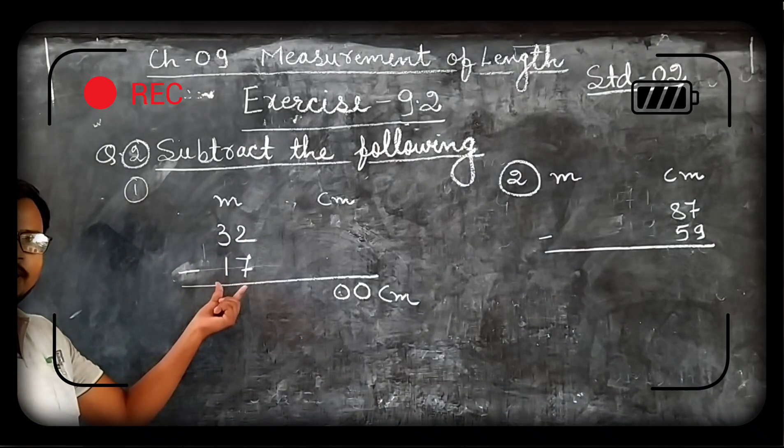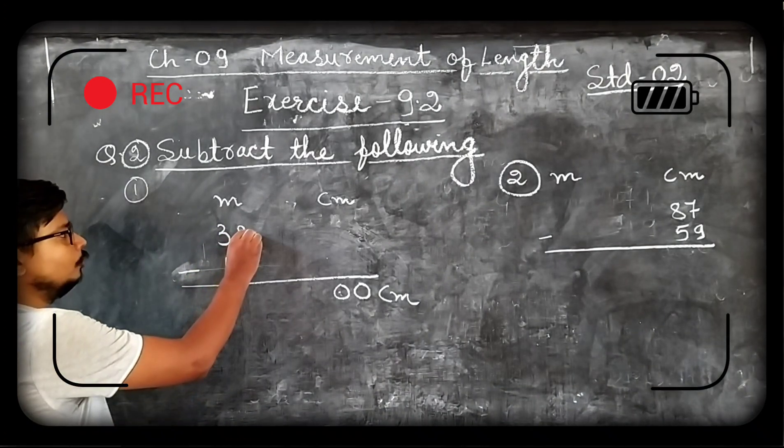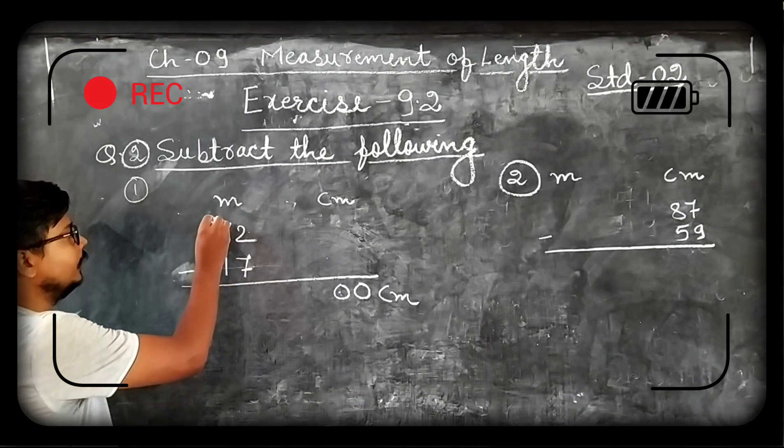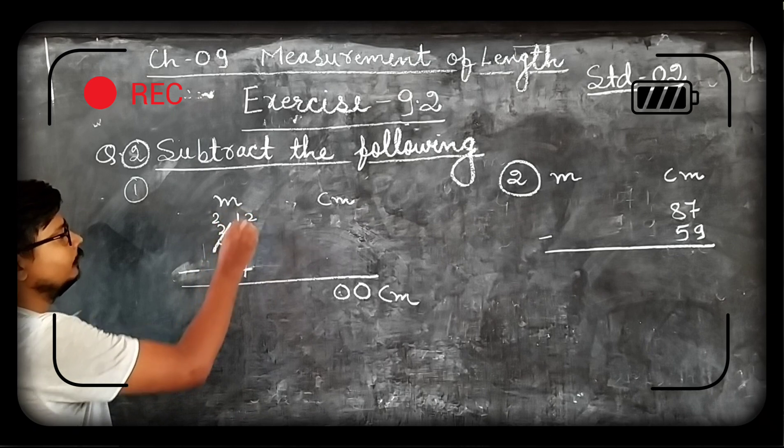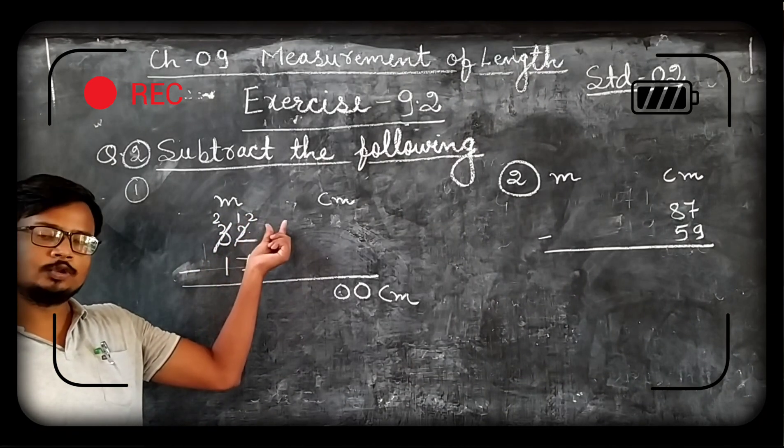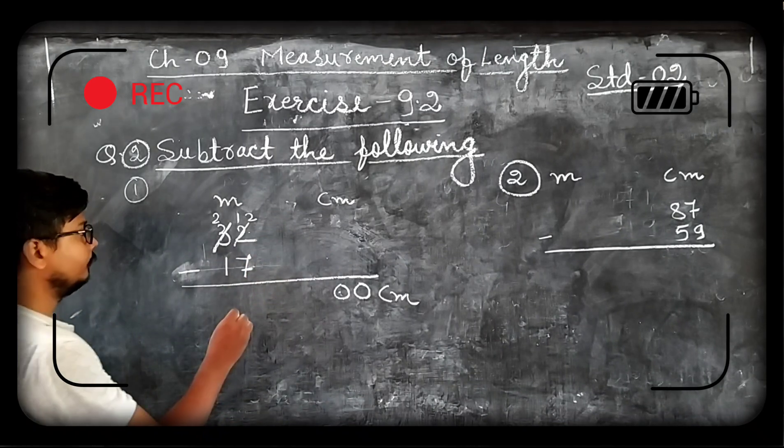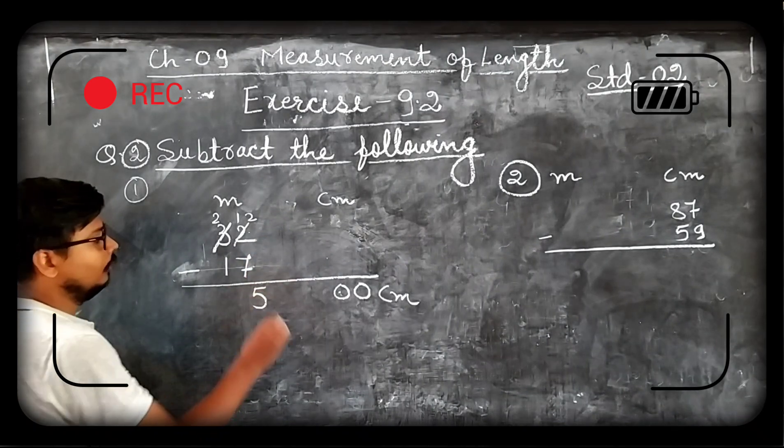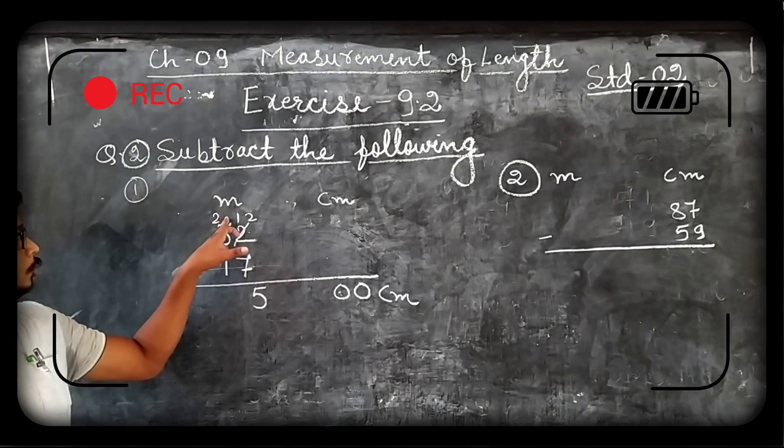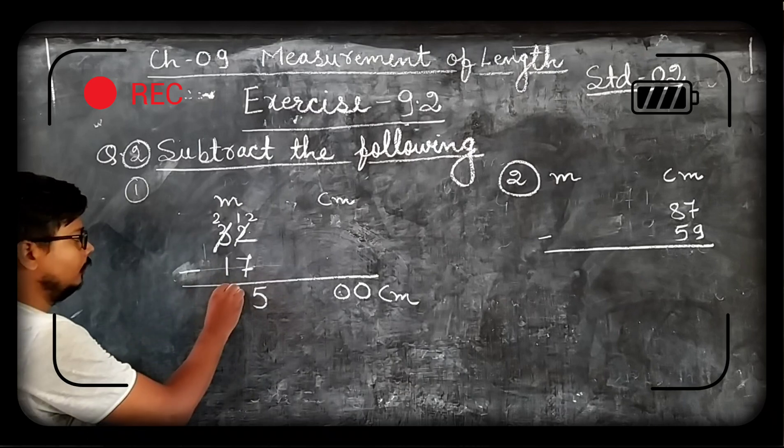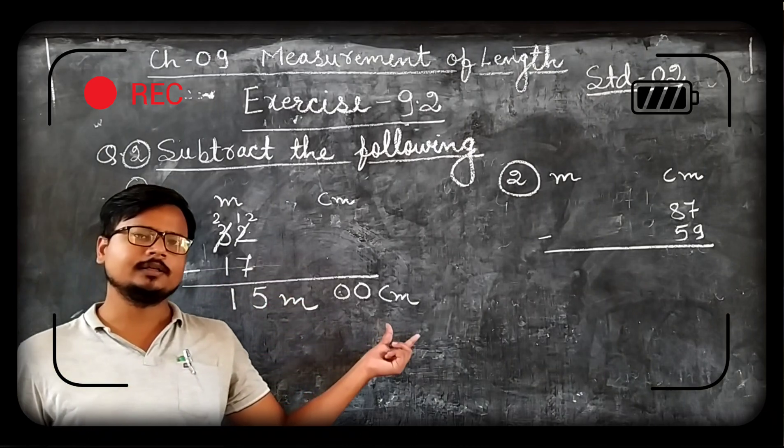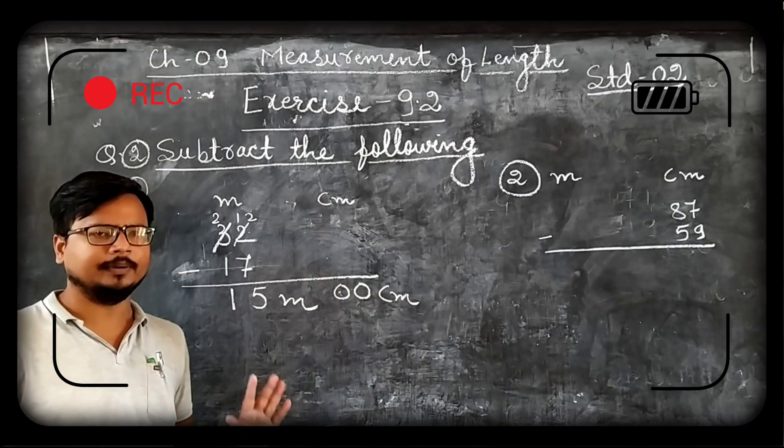32 minus 17. From 2 we cannot subtract 7. So we carry 1 from 3. 3 becomes 2 and this 2 becomes 12. Now we can subtract 7 from 12. 12 minus 7 equals to 5. Now it became 2. 2 minus 1 is 1. So our answer becomes 15 meter 0 centimeters or simply you can say 15 meters.